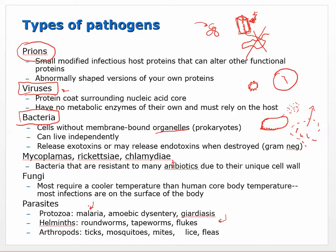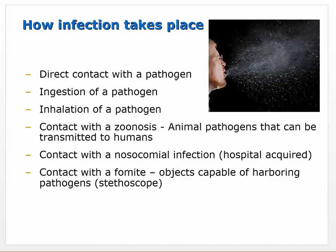How does infection take place? Direct contact with the pathogen could be one way. Ingestion could be another - many of these pathogens have evolved to survive stomach acid, as in the case of stomach ulcers.